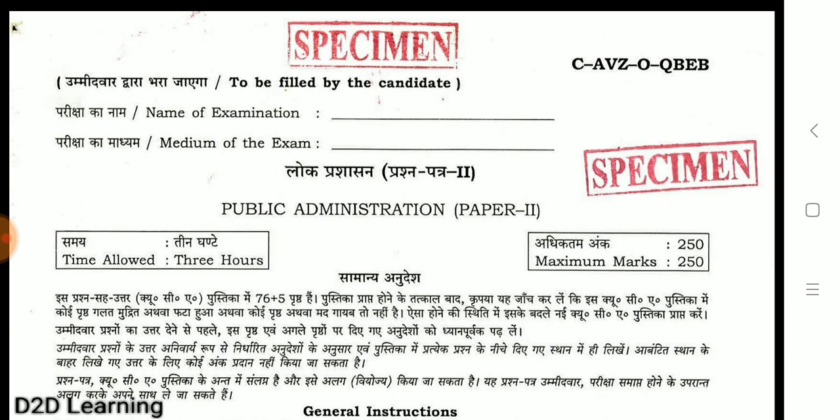UPSC Civil Service Examination is to look at various aspects. In our GS paper 1, 2, 3, 4, essay paper, compulsory paper, all syllabus — previous questions, how to follow the syllabus, how to approach the syllabus, and how to look at the question-cum-answer booklet.